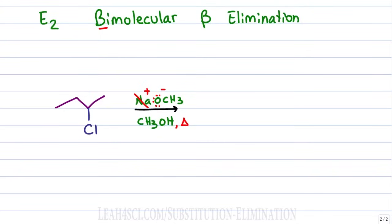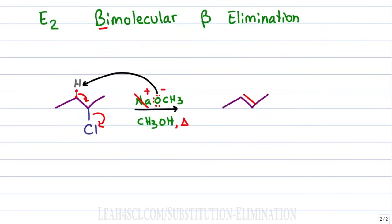Like the E1 reaction, we're not attacking the carbocation directly. Instead, we're looking for the most substituted beta hydrogen so that the base can grab and pull it off the molecule. This causes the electrons between hydrogen and carbon to collapse in the direction of the leaving group, kicking it out in one step with absolutely no intermediate, to give us the product: a pi bond between the alpha and more substituted beta carbon — the Zaitsev elimination.